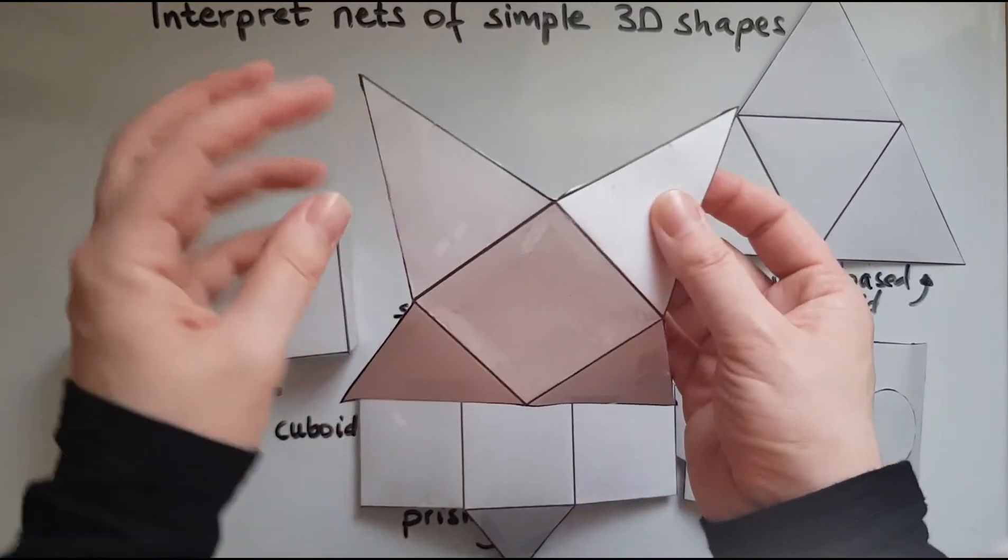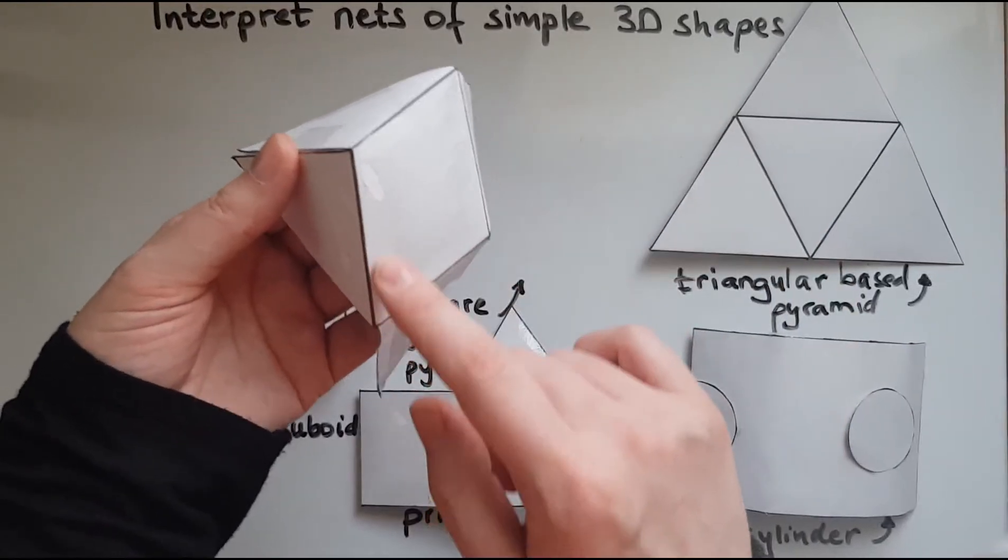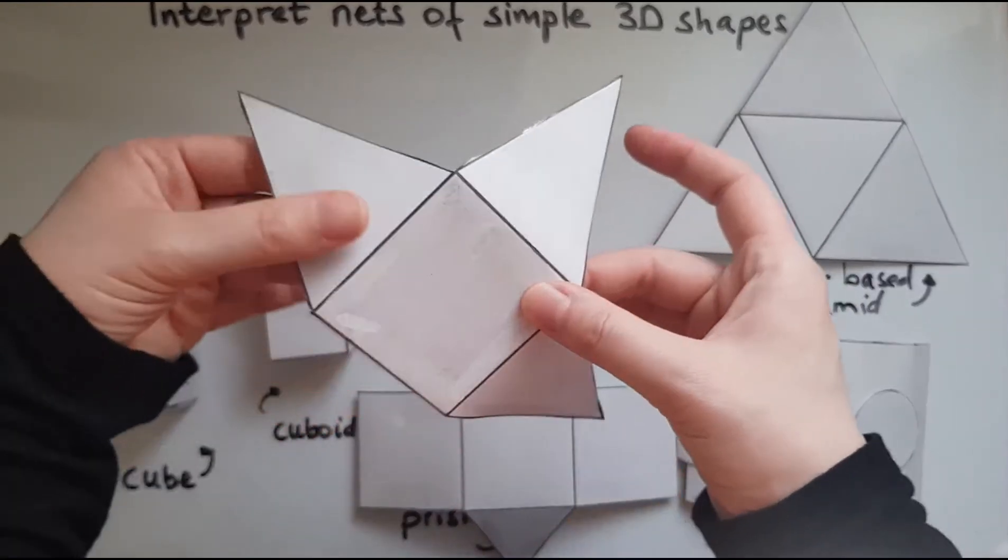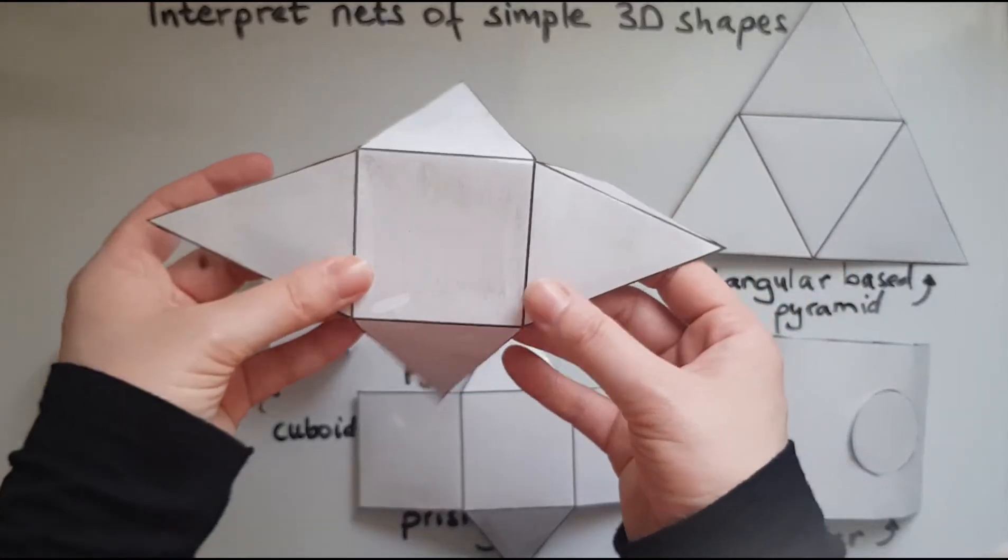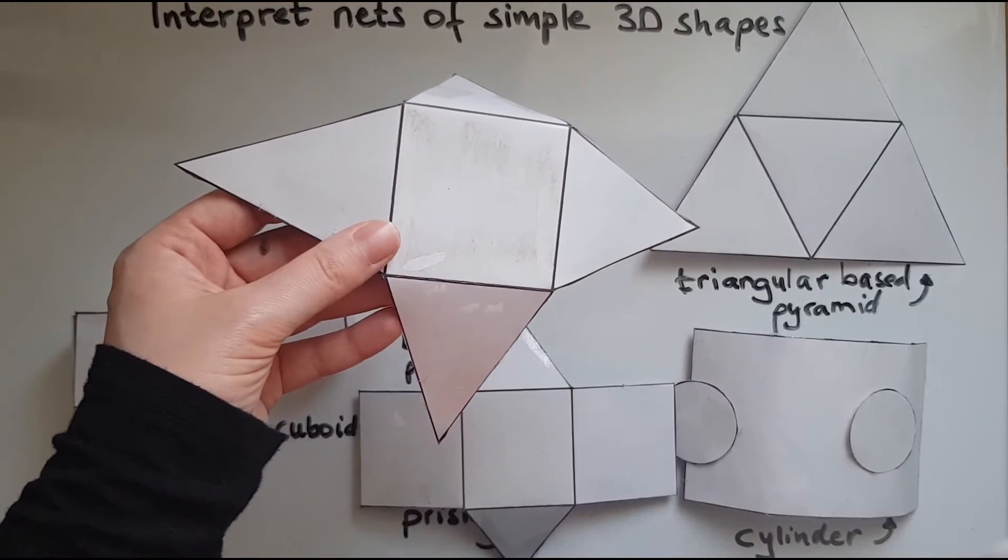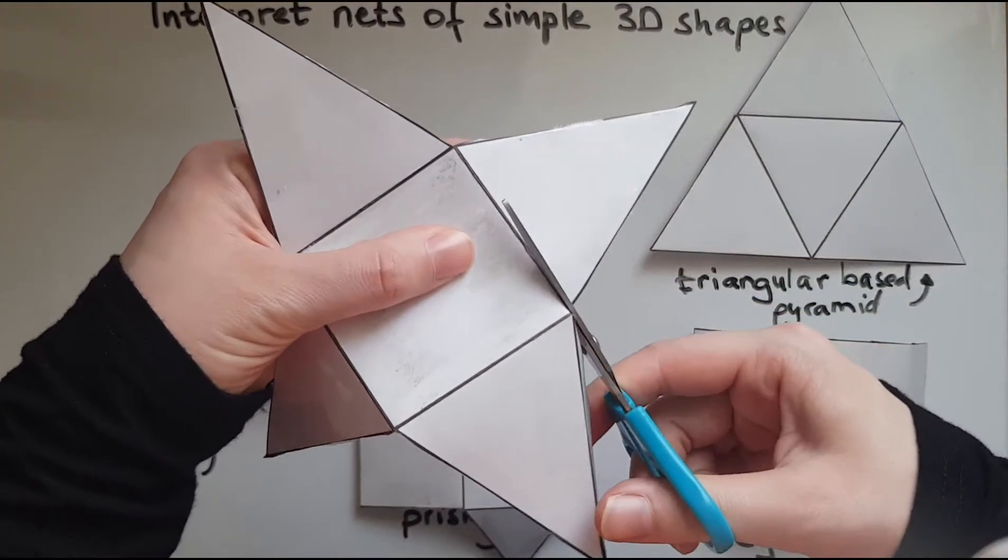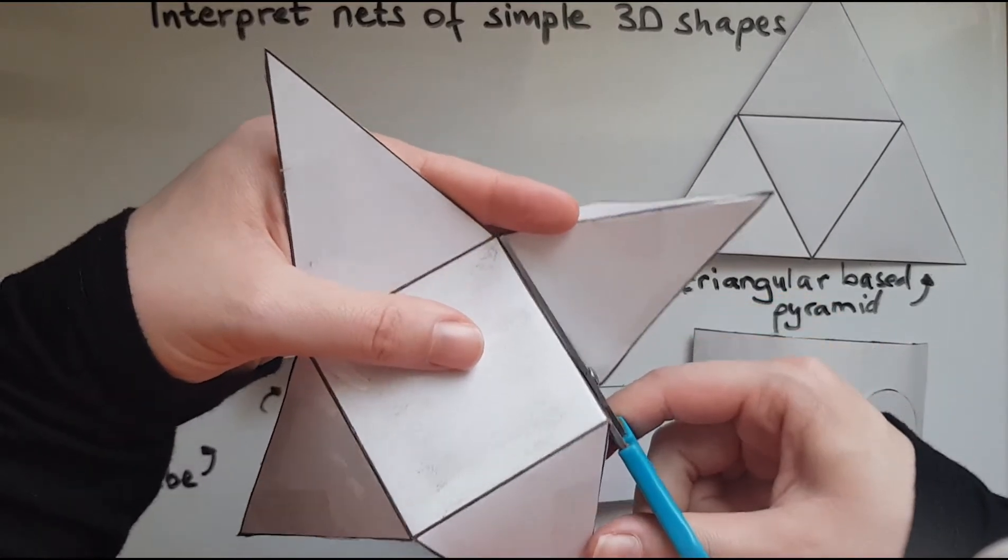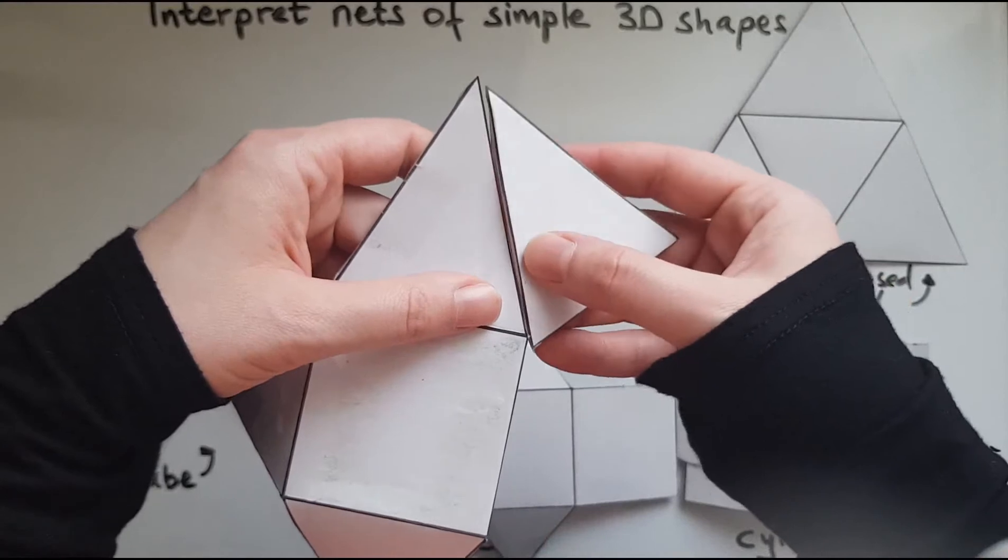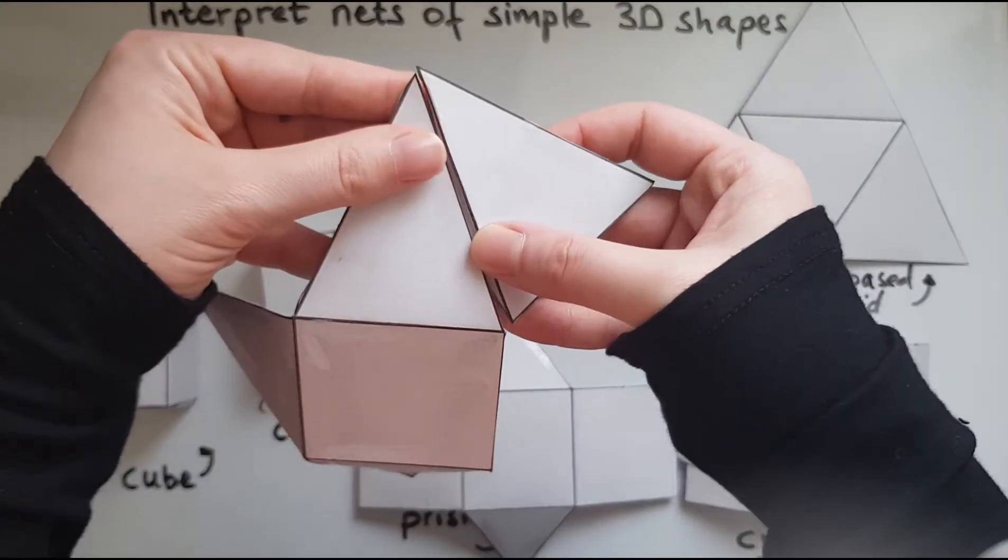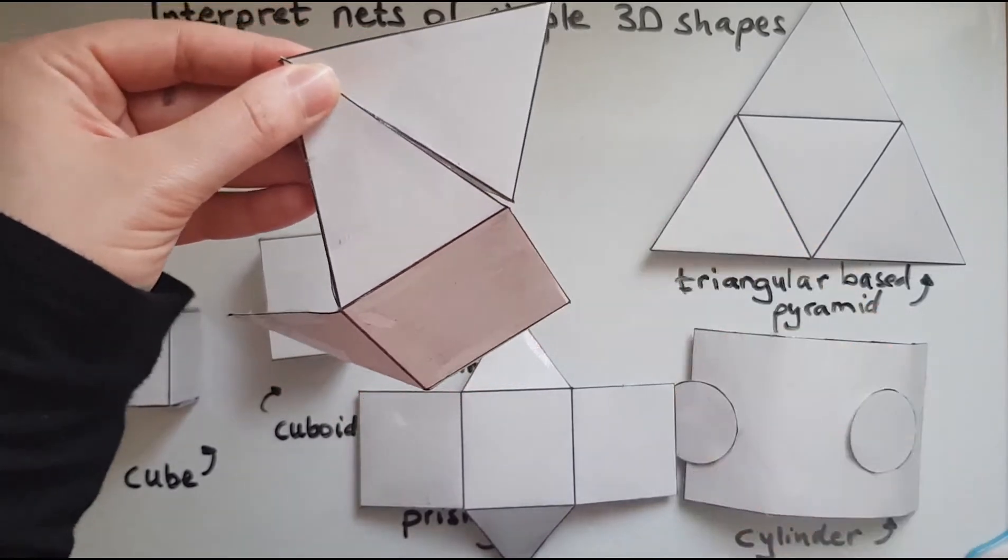But of course, these triangular faces could be joined together rather than to the square base. And that would still make a square-based pyramid. So we'll show you now. If I cut it off the base and if I stick this triangle next to the other triangle, we've got the same length, these two sides.